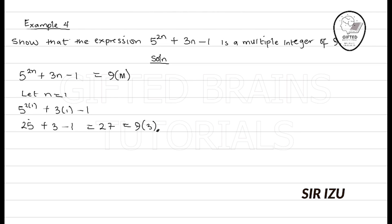So, that is correct for n equal to 1. So, we can move on to step number 2. Now, step number 2, we say let n be equal to k. Then, we have 5^(2k) + 3k - 1, just replacing the n by k, is a multiple of 9, 9 into bracket m. See this equation? I'll call it equation 1.